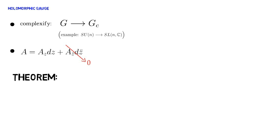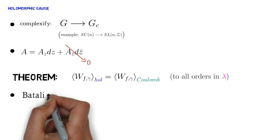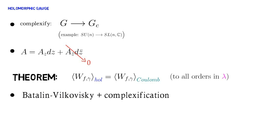My main result here is that holomorphic gauge is equivalent to Coulomb gauge. That is, Wilson loop expectations computed with respect to these gauges agree. This involves combining the Batalin-Vilkovisky method with complexification.